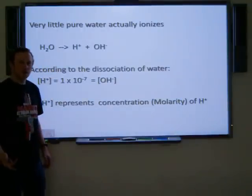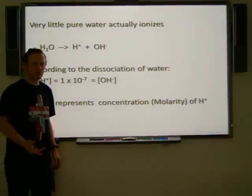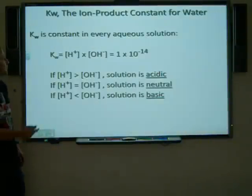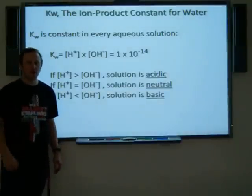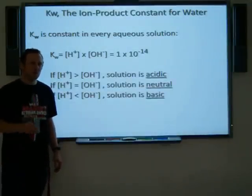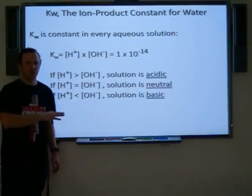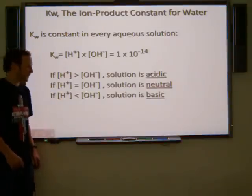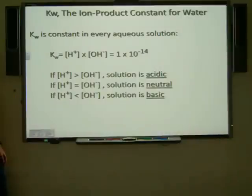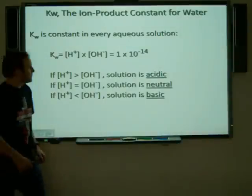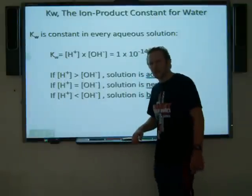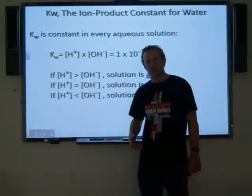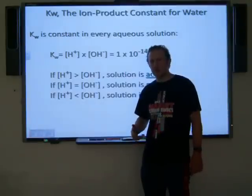Now we can use this number to actually create a new constant, and that's what we're going to talk about next. This constant is referred to as the ion product constant for water, Kw. I think at this point it makes more sense to get this information first and then you can take notes as I explain what each thing represents and how we came to these numbers.